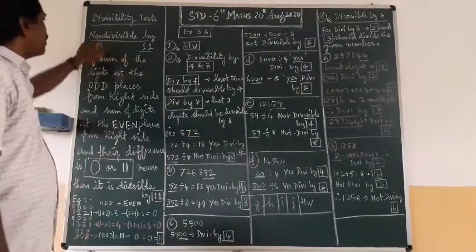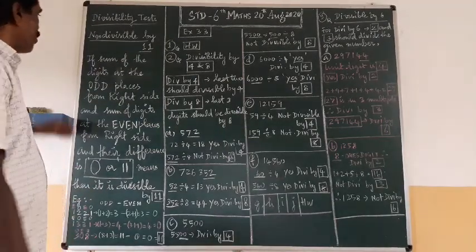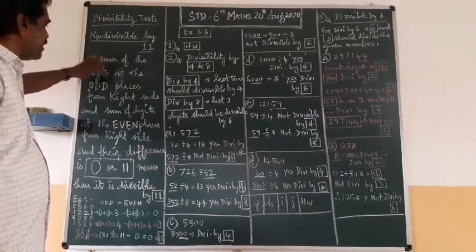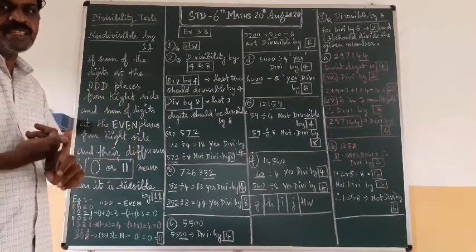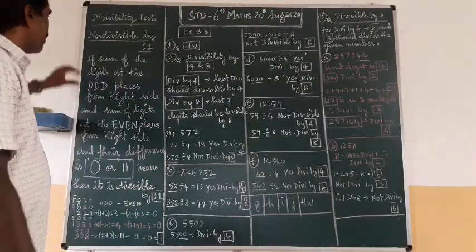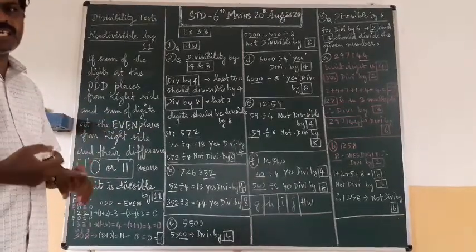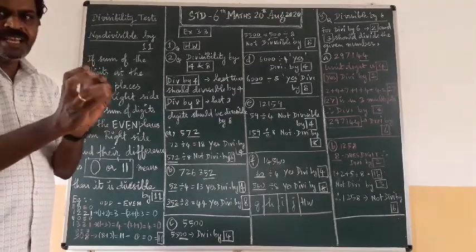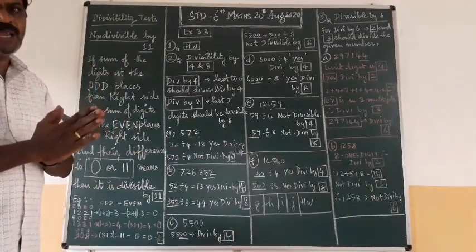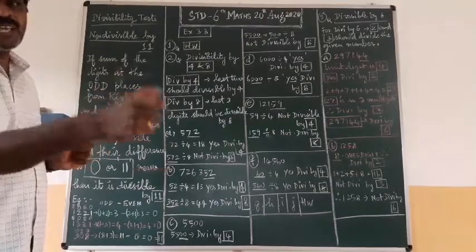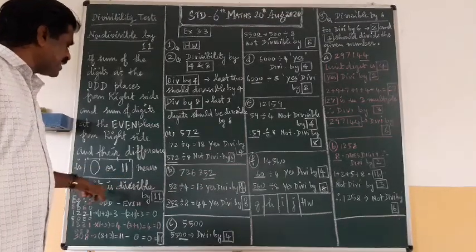Today we continue with the last one: numbers divisible by eleven. The condition is: find the sum of digits at odd places (1st, 3rd, 5th, 7th... from the right) and the sum of digits at even places (2nd, 4th, 6th...). Find the difference — odd place sum minus even place sum. If the result is zero or a multiple of eleven, the number is divisible by eleven.